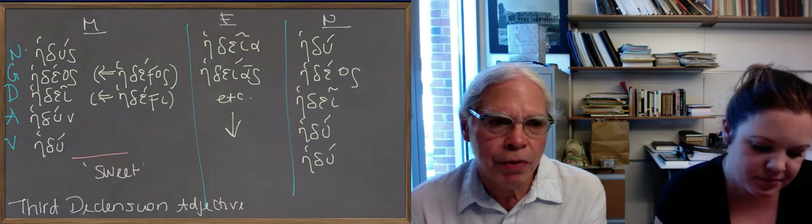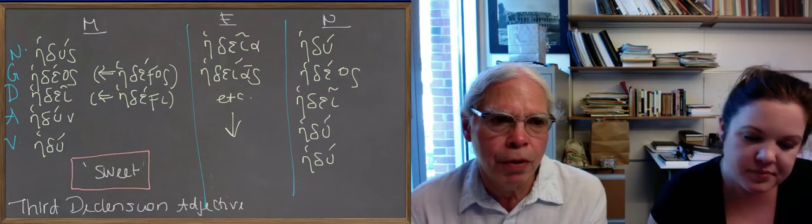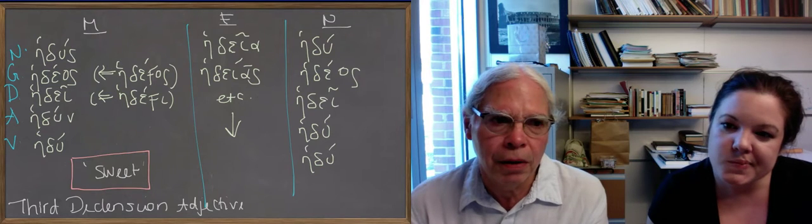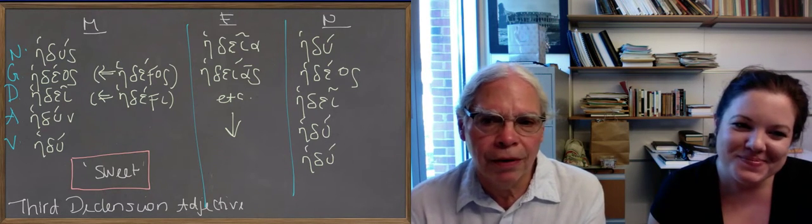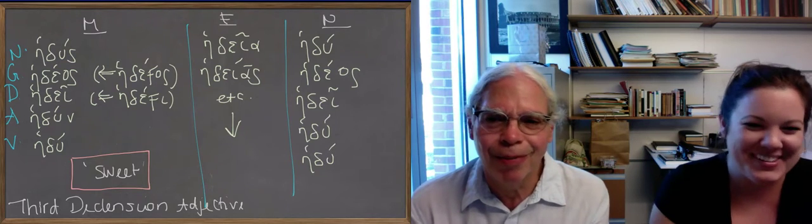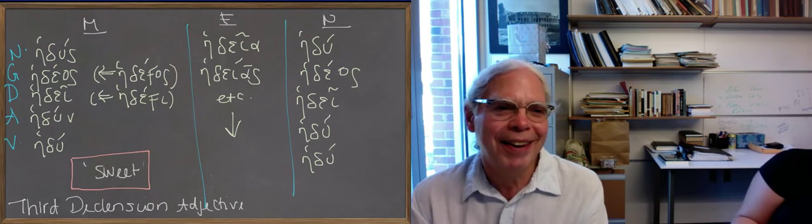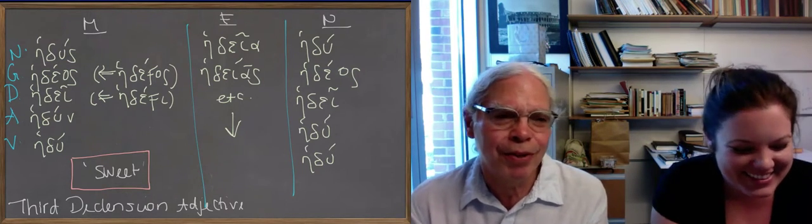And you remember we've seen recently what happens with u as a form and as a vowel before di-junctional endings. That is it becomes w and then it disappears.